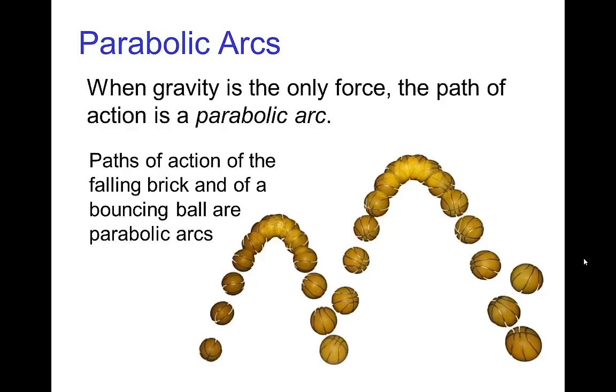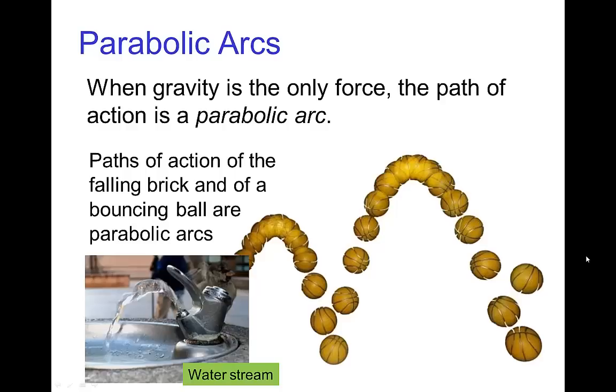When gravity is the primary force that is deflecting the motion as it flies through space, we get a path of action that's a parabolic arc. We see this even in effects animation, so a water stream also traces out a parabolic arc, as we can check by overlaying with the bouncing ball.